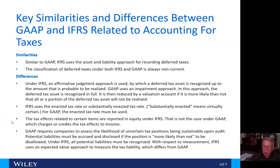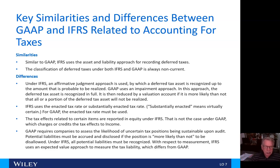Number three, the tax effects related to certain items are reported in equity under IFRS. That is not the case under GAAP, which charges or credits the tax effects to income. Number four, GAAP requires companies to assess the likelihood of uncertain tax positions being sustainable upon audit. Potential liabilities must be accrued and disclosed if the position is more likely than not to be disallowed. Under IFRS, all potential liabilities must be recognized. With respect to measurement, IFRS uses an expected value approach to measure the tax liability, which differs from GAAP.